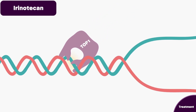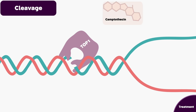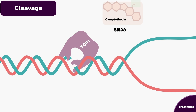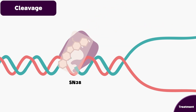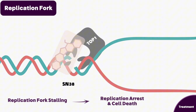One such derivative is irinotecan. When topo 1 cleaves the single-stranded DNA to relieve coiling ahead of the replication fork, irinotecan — which is composed of a camptothecin-like nucleus with the addition of two rings — can be cleaved by esterases to form the active compound SN-38, causing locking of the replication fork and subsequently cell cycle arrest.